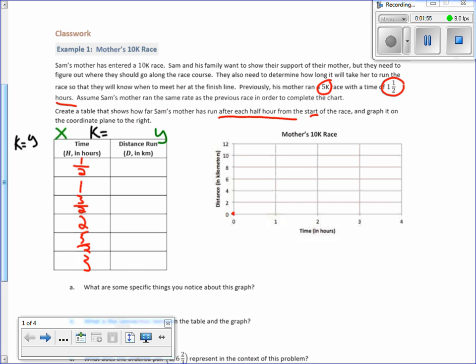I'm going to focus on this column is always x, this is always y, and k is y over x. So if they think she ran a 5K race with a time of one and a half hours, then we're going to go to one and a half and put a dot at five. Five kilometers in one and a half hours.